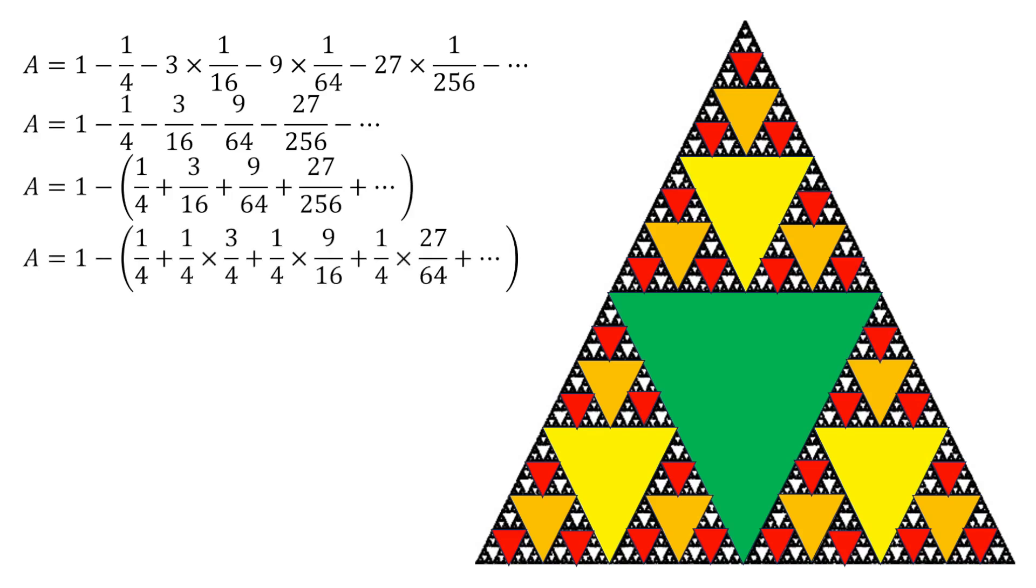Next we can look at that as one-fourth times three-fourths, which is the three-sixteenths; one-fourth times nine-sixteenths, which is the nine over sixty-four; and one-fourth times twenty-seven over sixty-four, which is the twenty-seven over two-hundred-fifty-six. When we look at it, that nine-sixteenths is related to the three-fourths—it's the square of three-fourths. That twenty-seven over sixty-four is the cube of three-fourths.